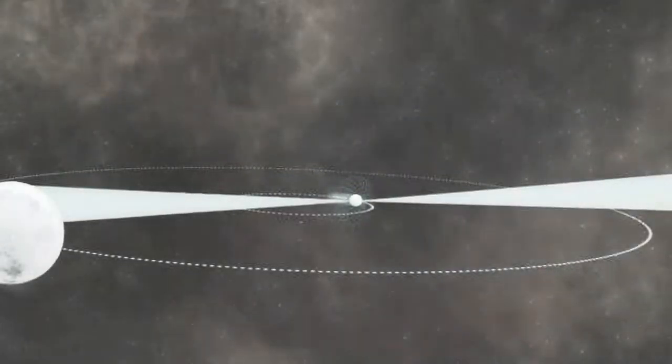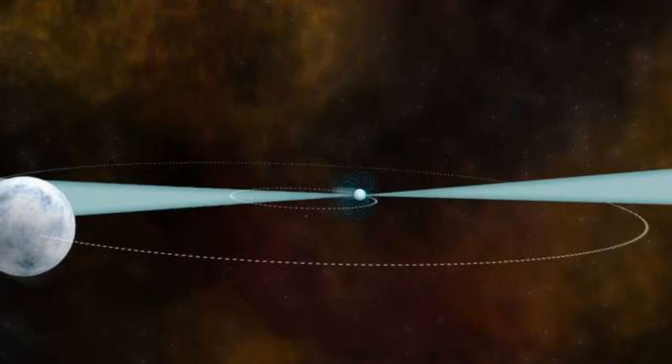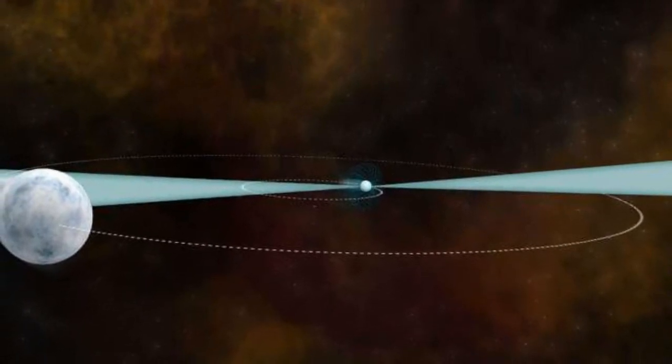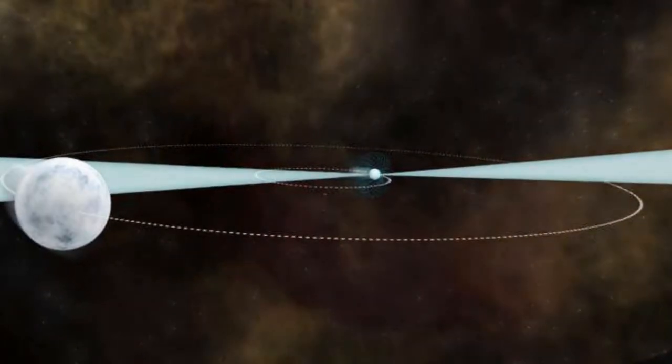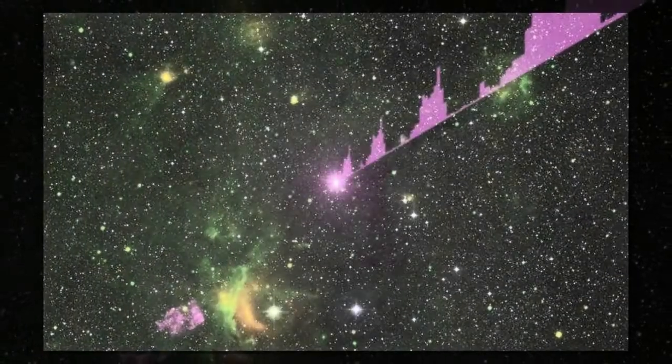This particular pulsar is approximately 3,750 light-years from Earth. It orbits a companion white dwarf star and is one of the brightest, most stable pulsars known.